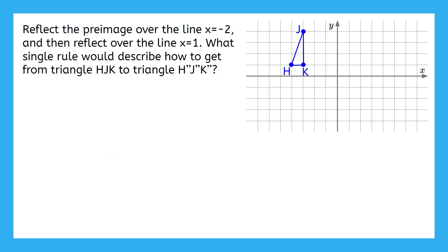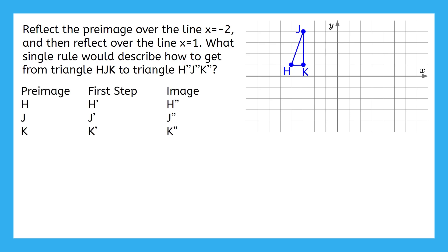Our second example involves reflections over parallel lines. This says to reflect the pre-image over the line x equals negative 2, and then reflect over the line x equals 1. What single rule would describe how to get from triangle H, J, K to triangle H double prime, J double prime, K double prime? Sketching on a coordinate plane would be the easiest way to find the first step and image for this problem. Pause the video now so you can work this out.